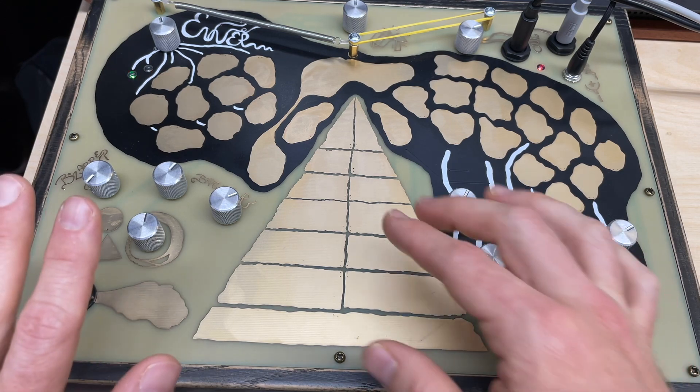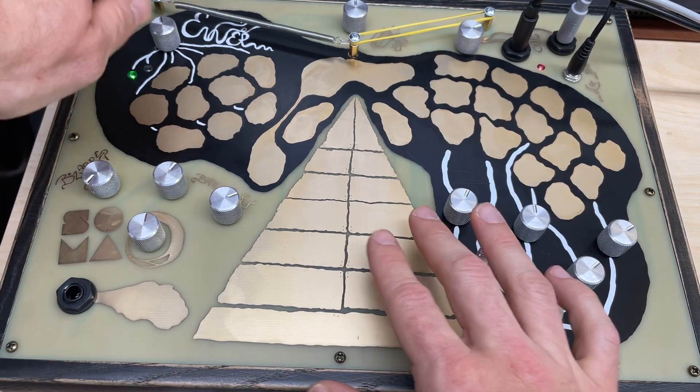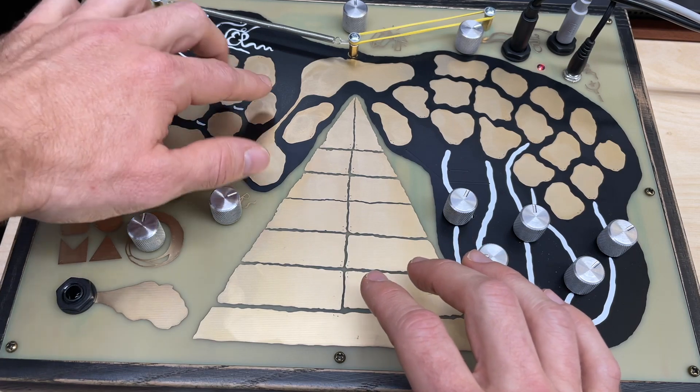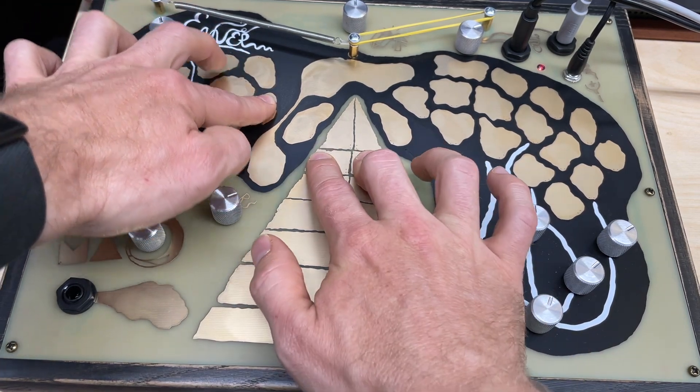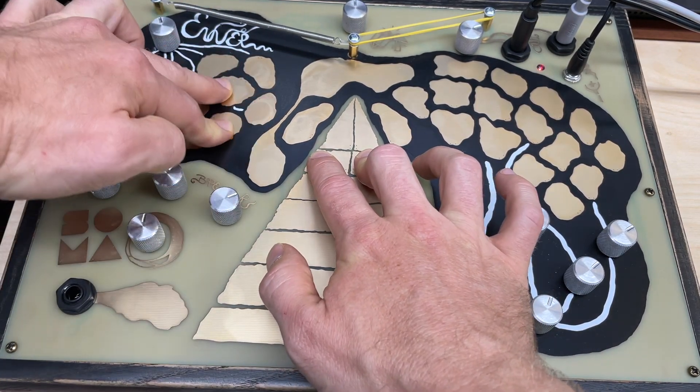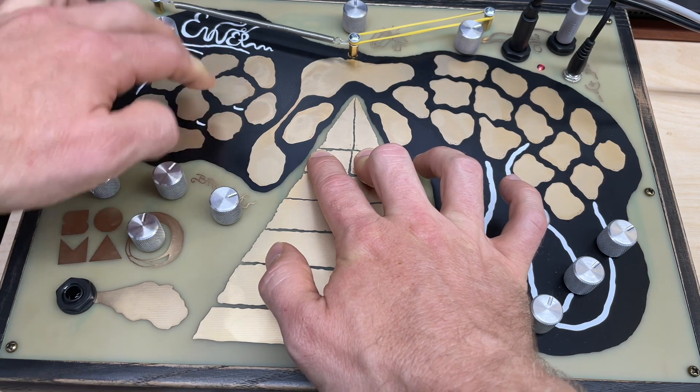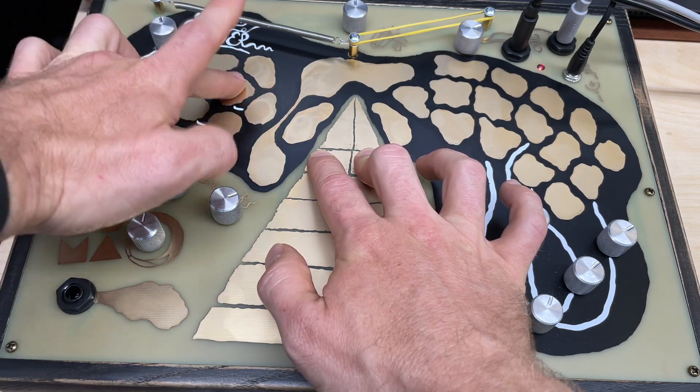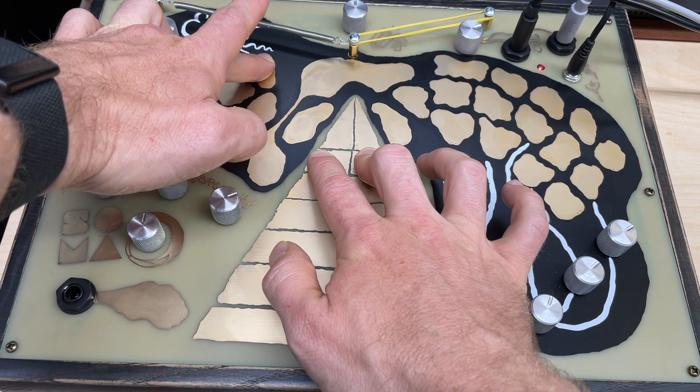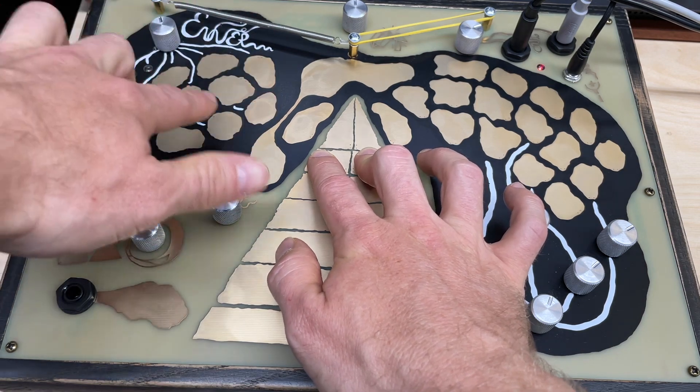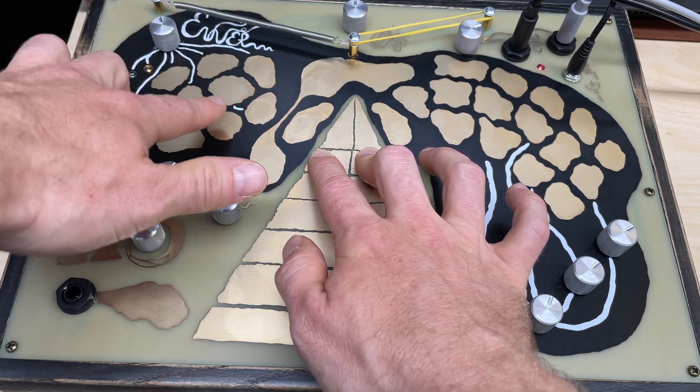We can do some sort of pulse drumming here. So each one of these pads is sort of going to be a different subdivision of what's happening with the tempo up here.